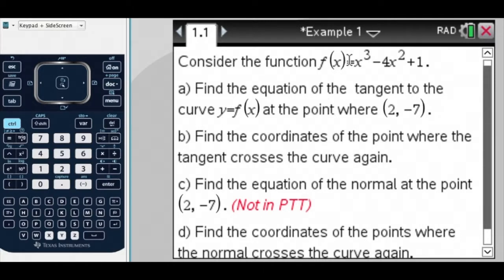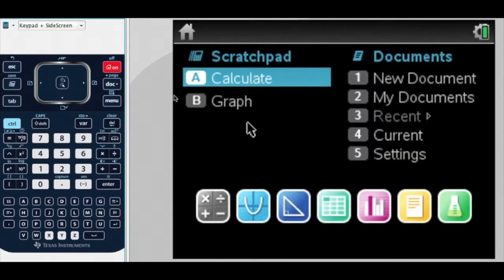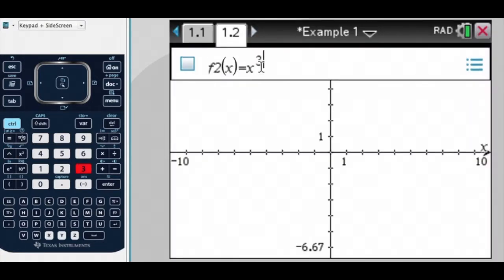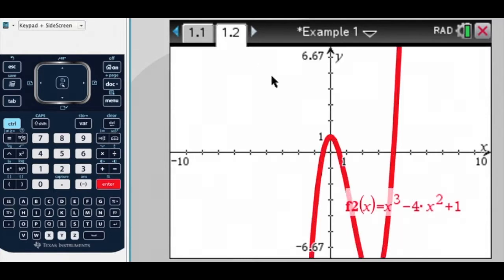So first we've got this function, x cubed minus 4x squared plus 1. Let's graph it using a graphing document. Press on graph x cubed minus 4x squared plus 1, and there's my curve.